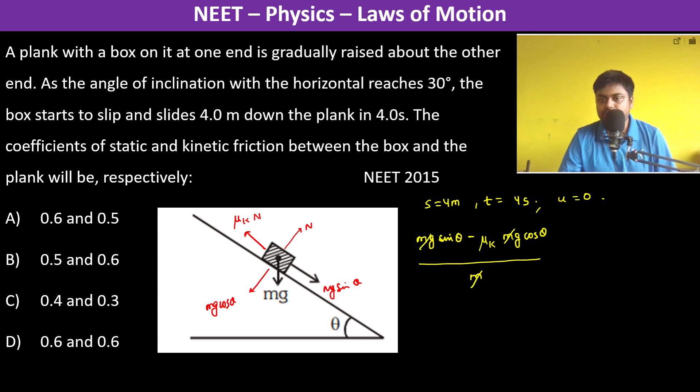From s equals ut plus half a t squared. So 4 is equal to, u is 0, half into a into t squared, 4 into 4. So a is actually 0.5.